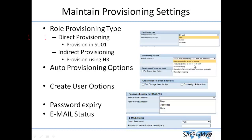The second option is provisioning at the end of each path. If there are detours in the request — some portions going to different paths for approval, such as SOD approvers — then when each path is completed the provisioning happens. You don't need to wait for the entire process to complete. The third option is no provisioning — no auto provisioning at all. Next is manual provisioning with auto password generation, where provisioning is done manually but the password is generated automatically and sent to the user.